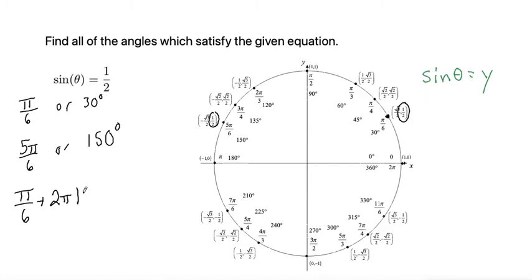Where k represents any integer. So k is an integer. And that k represents the number of times that we would go around the unit circle.